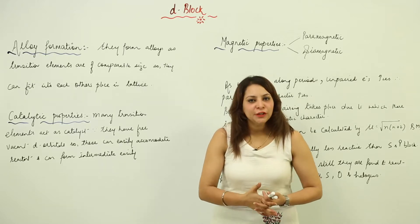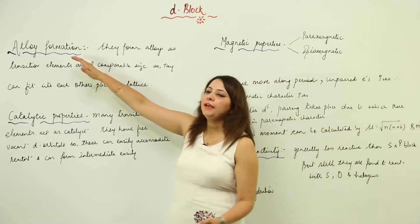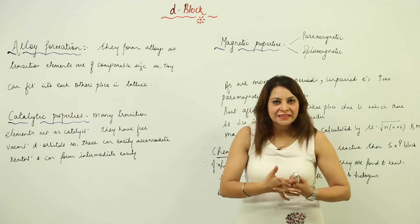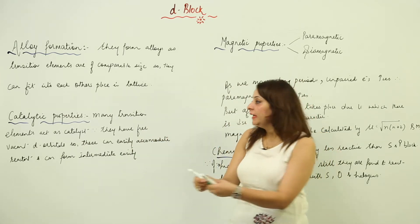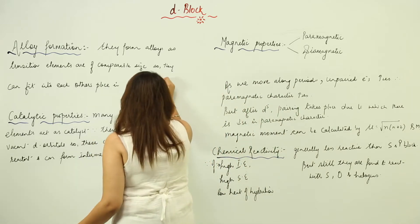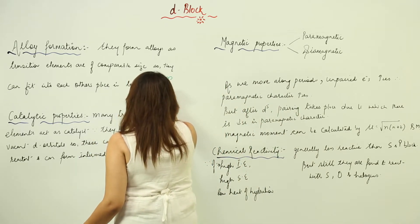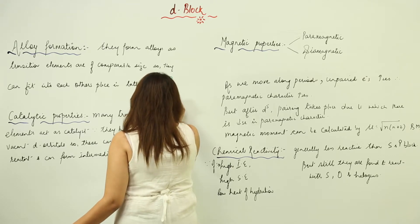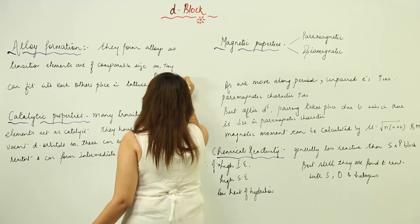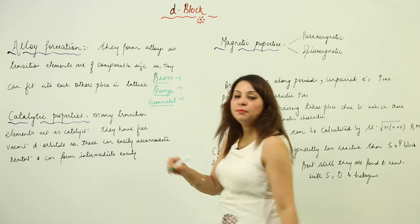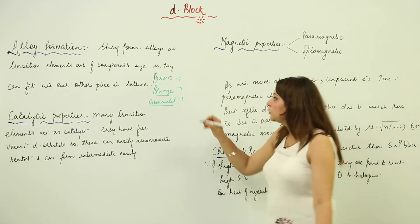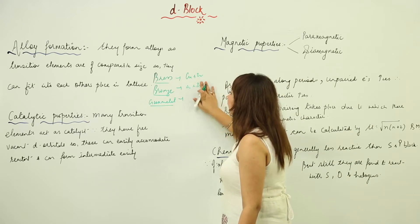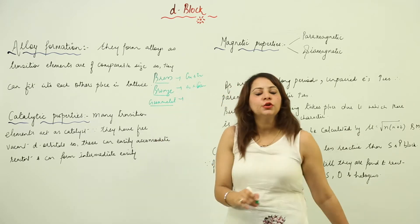Now coming to the property of the D-block, that is alloy formation. You'll be surprised to know that most of the alloys which we see in general routine life — brass, bronze, gunmetal, and many more — are actually made up of transition elements. Brass is formed of copper and zinc, and bronze is formed of copper and tin.